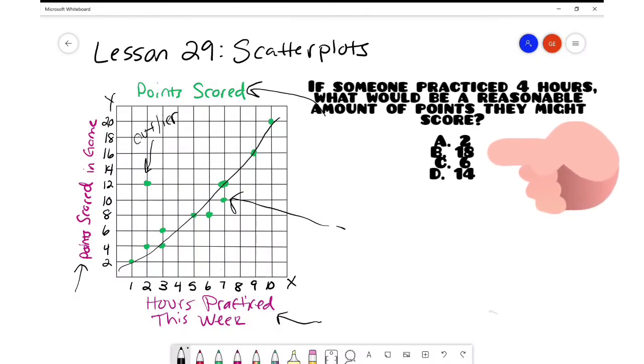B says 18. That would be an outlier above the trend line. C says six. And that is actually right on that trend line that I drew. Four, six. The ordered pair four, six is right there. So that's awesome.